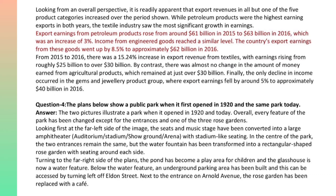Export earnings from petroleum products rose from around $61 billion in 2015 to $63 billion in 2016, which was an increase of 3%. Income from engineered goods reached a similar level — the country's export earnings from these goods went up by 8.5% to approximately $62 billion in 2016. From 2015 to 2016, there was a 15.24% increase in export revenue from textiles, with earnings rising from roughly $25 billion to over $30 billion.